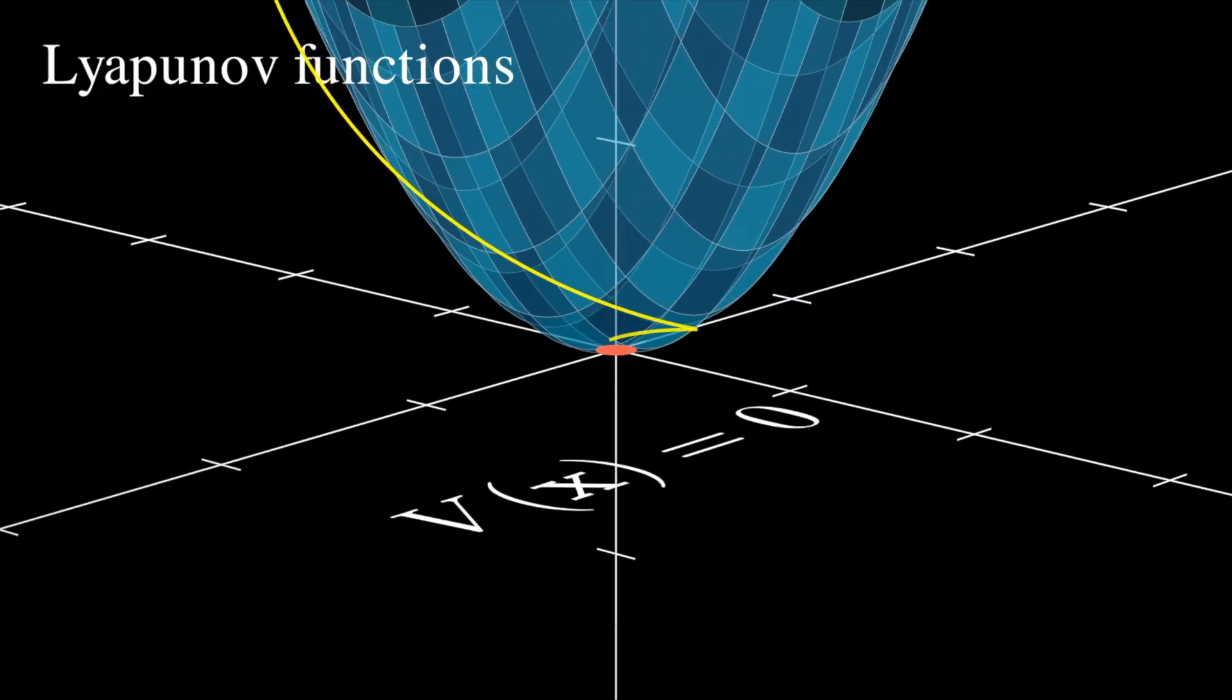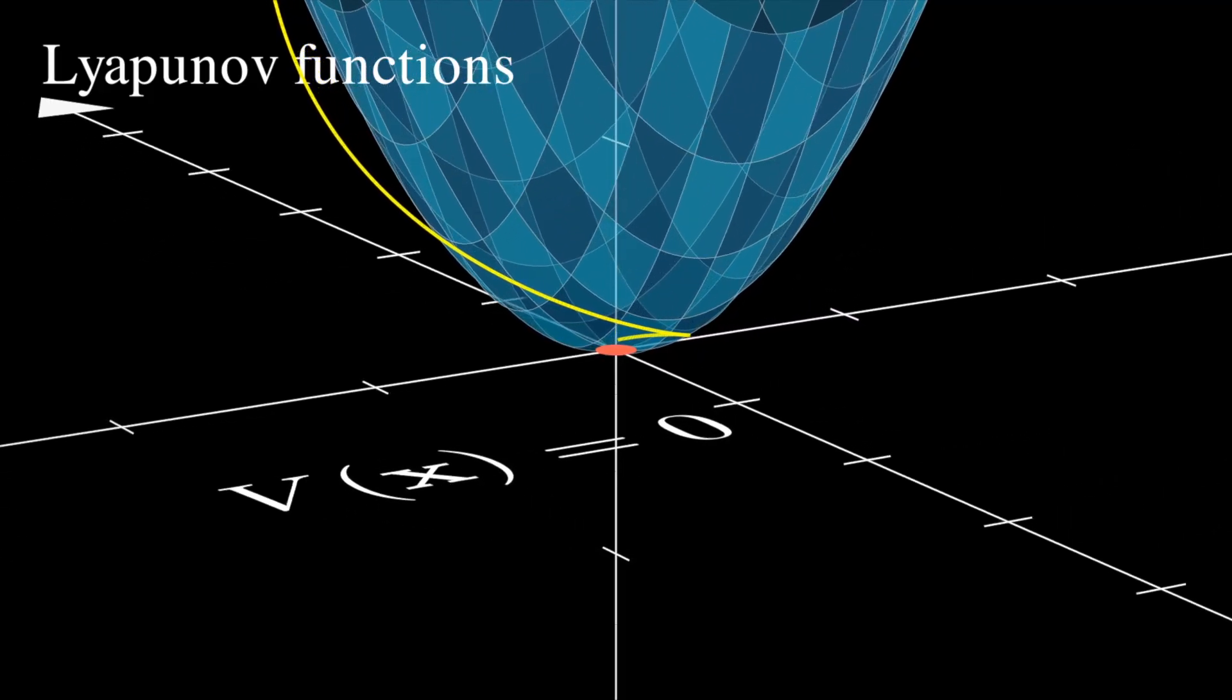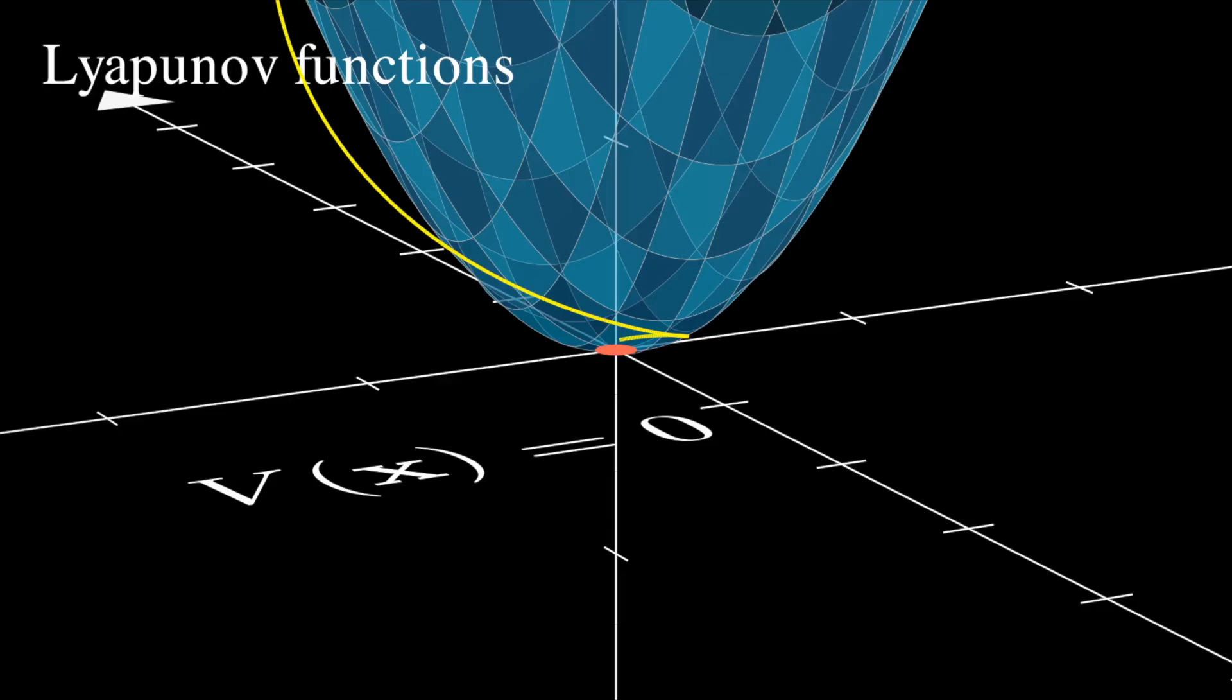For linear systems, it's easy to find this type of function. But for nonlinear systems, it's very difficult, as there are no existing analytical techniques to aid us.